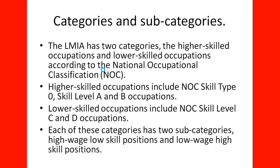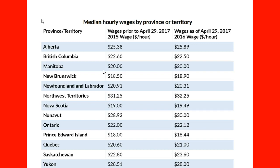Each LMIA category has high wage and low wage subcategories. By following the median hourly wages by province or territory posted by the Government of Canada, we can see differences by province. Based on the date prior to April 29, 2017, when changes were made, figures of $25.38 and $25.86 are examples depending on when the LMIA is applied and when the position is required. The median hourly wage varies province by province, and the specific occupation must also be taken into consideration during LMIA evaluation.